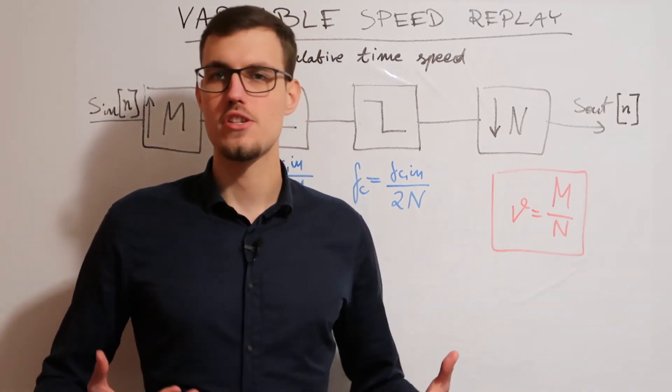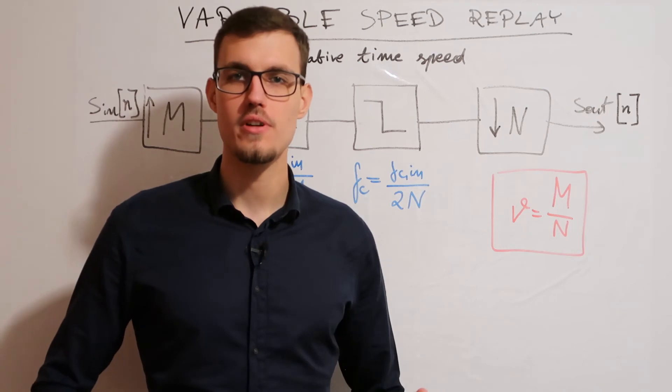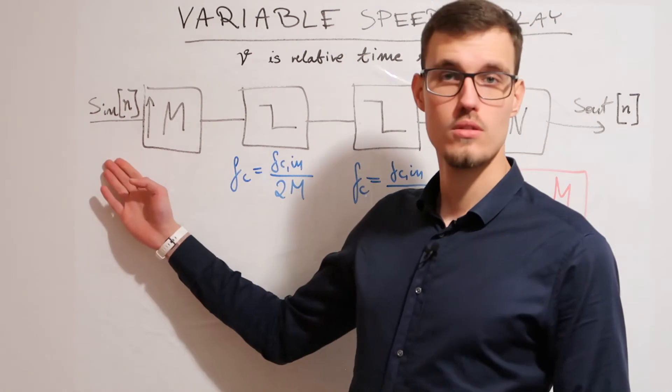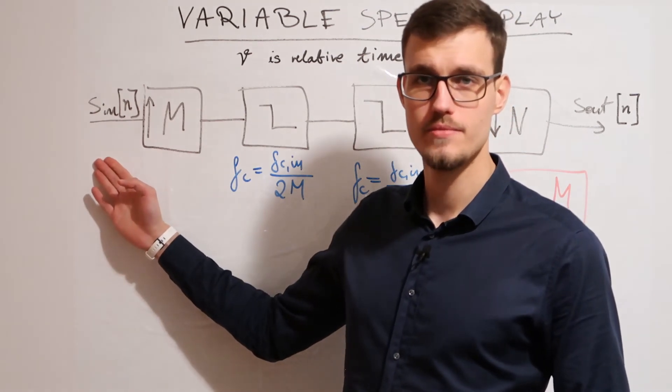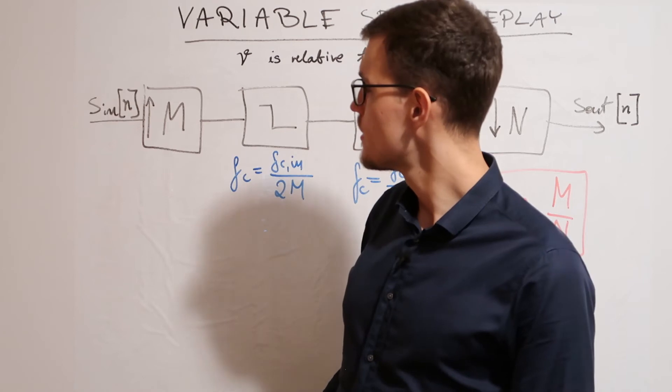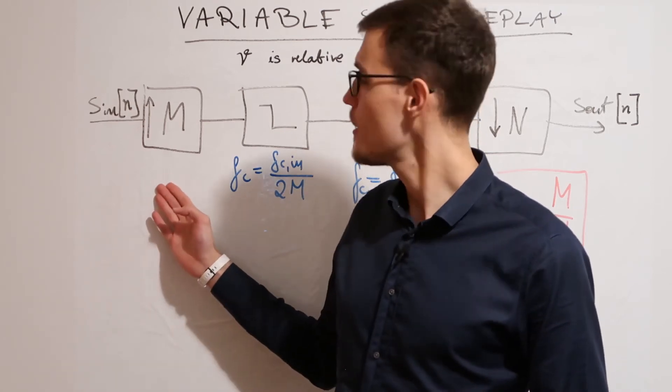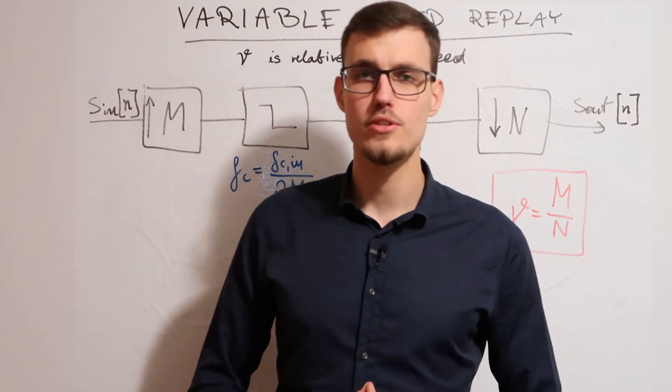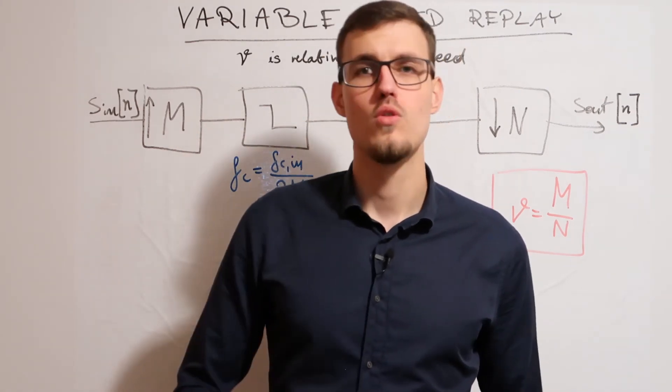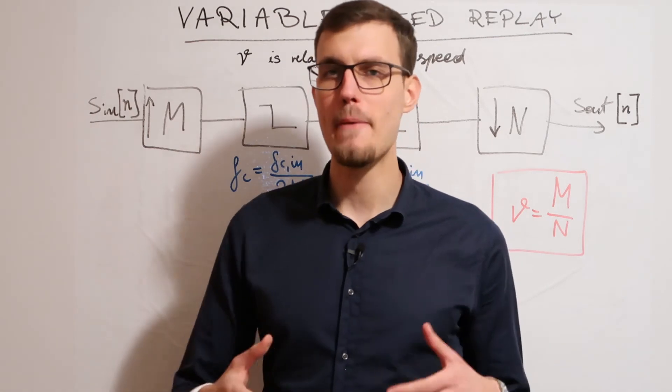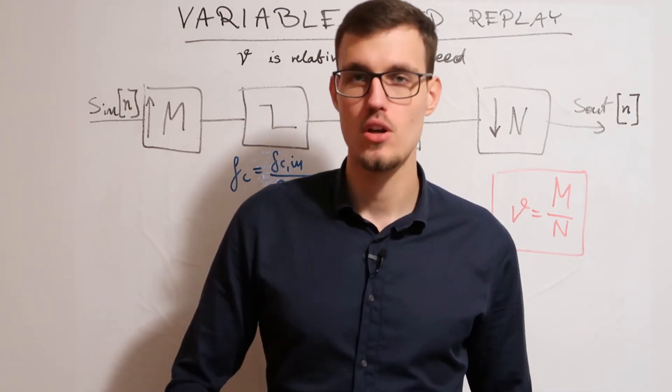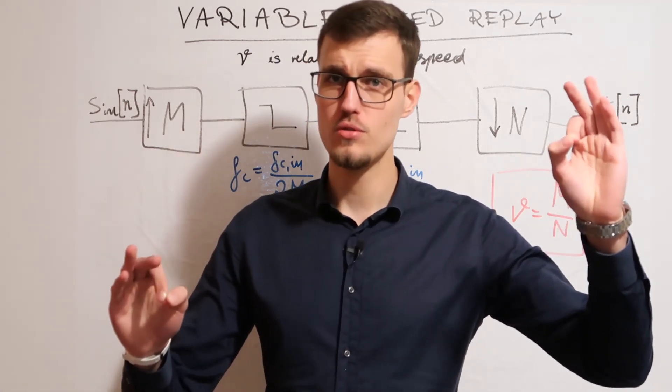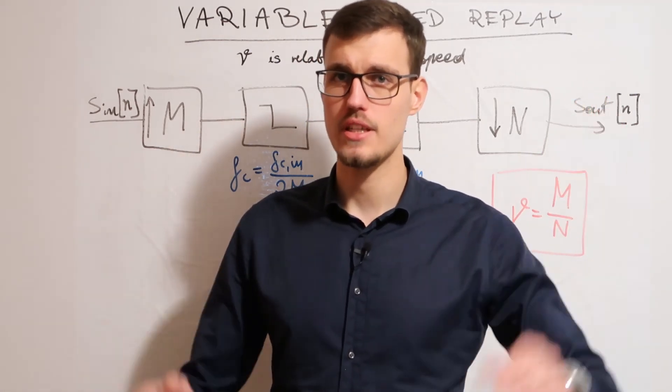With this notation in place, our algorithm looks as the following. We have the input signal here, and then we upsample it by a factor of M, which means that after each sample, we insert M-1 samples, which should be the mean between the two adjacent samples in the input signal.